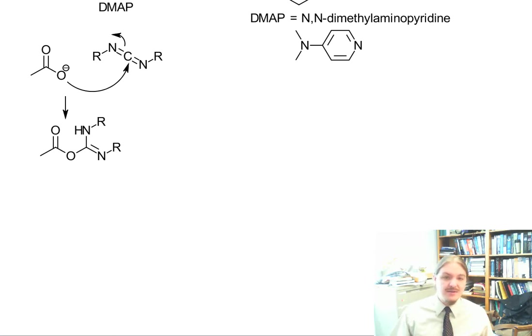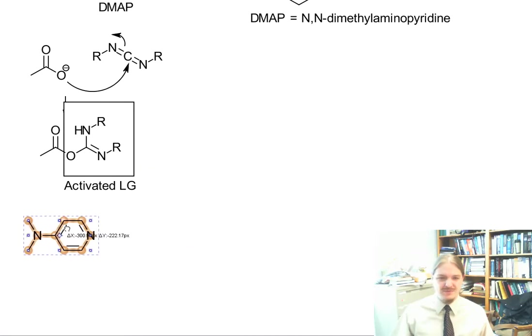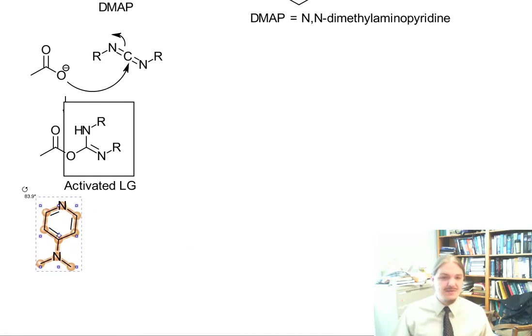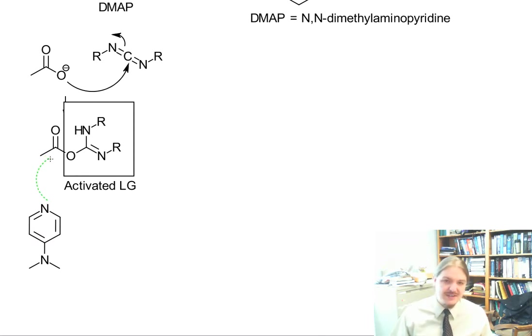This thing now is a pretty activated leaving group. You might expect that our alcohol is the next nucleophile, but some studies of this reaction have actually shown that the dimethylaminopyridine is the next nucleophile.